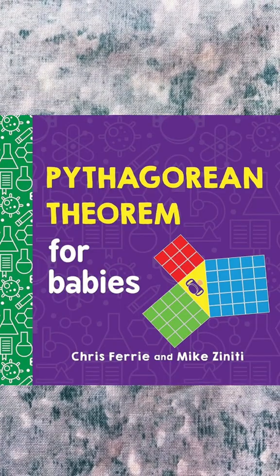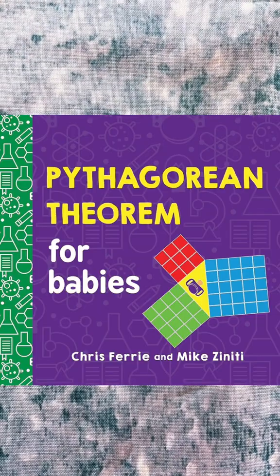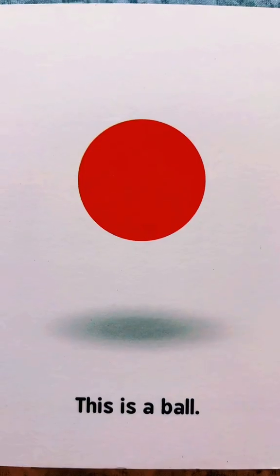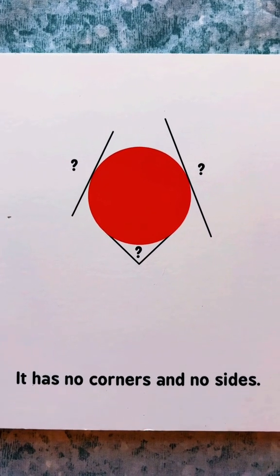Pythagorean Theorem for Babies by Chris Ferry and Mike Zanidi. This is a ball. It has no corners and no sides.